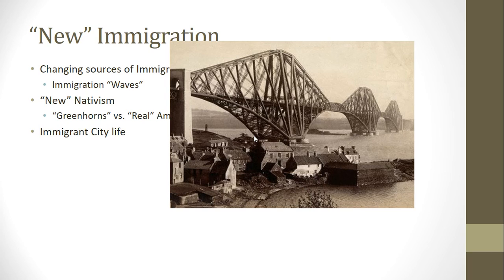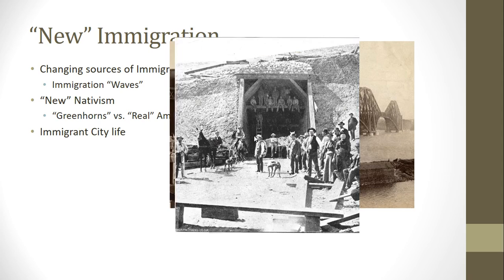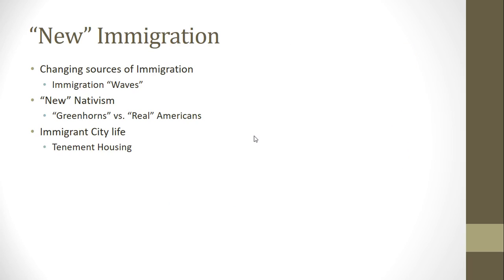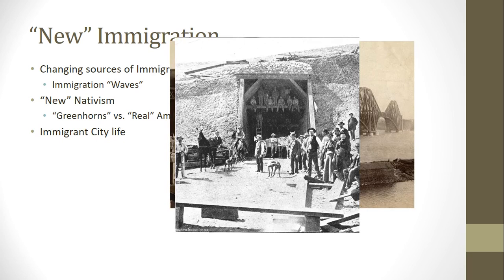Immigrants also played a huge role in increasing the infrastructure of the United States, specifically building things like the Brooklyn Bridge. These types of construction projects are very difficult and super expensive, so if you can get low-cost immigrant labor to build them, you could cut costs significantly and still increase the infrastructure and amenities that these cities have. So we get immigrants working on things like that, on mining, on railroad construction, and the sewer system in New York City.